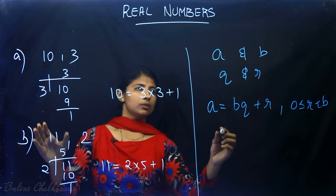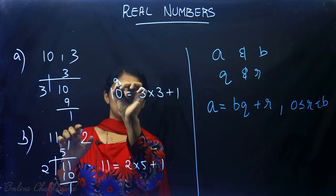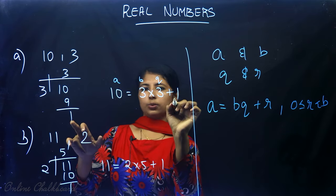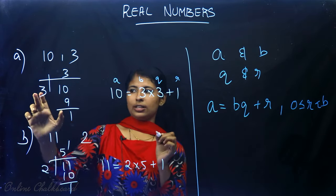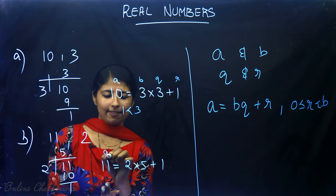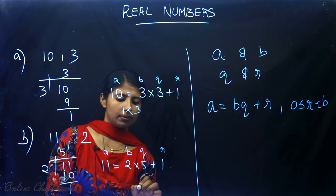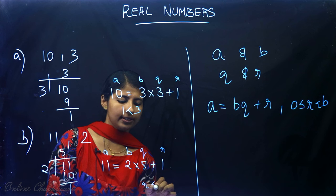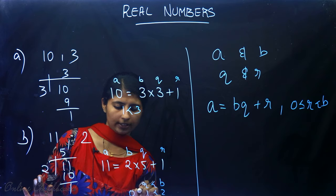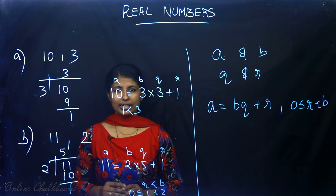Let's verify with our examples. We took A = 10, B = 3, quotient Q = 3, and remainder R = 1, which is less than B = 3. Similarly, A = 11, B = 2, Q = 5, and R = 1, which is less than B = 2 and also greater than or equal to 0. This is exactly what Euclid's division lemma states.